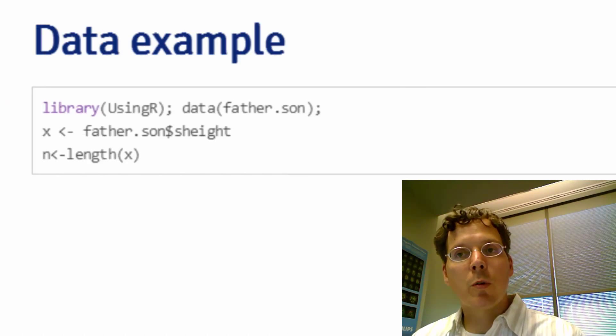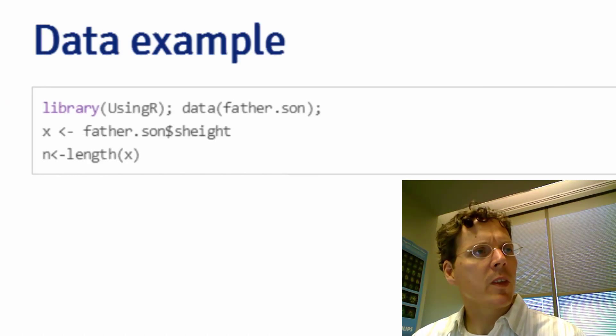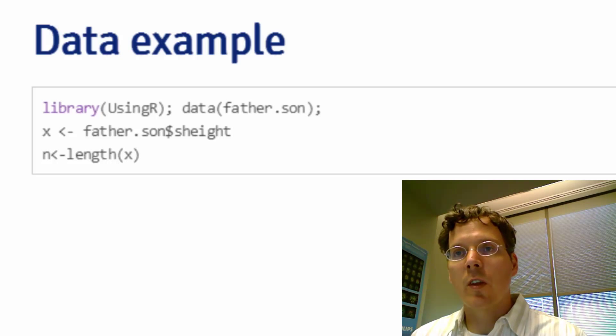And so let's actually go through a data example. Here I'm going to use the father-son data from the using-r data set, and I'm going to grab the son's height, and n is going to be the number of observations, like always.